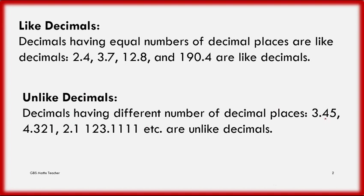3.45 has 2 decimal places, or 2 digits after the decimal. And in the second case, 4.321 has 3 digits after the decimal. In the next example, 2.1 has only one decimal digit. And 123.1111 has 4 decimal digits. So here we have 2, then 3, then 1, then 4 decimal digits. They are unlike decimals because they don't have an equal number of decimal digits after the decimal.